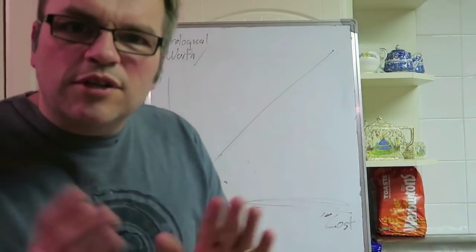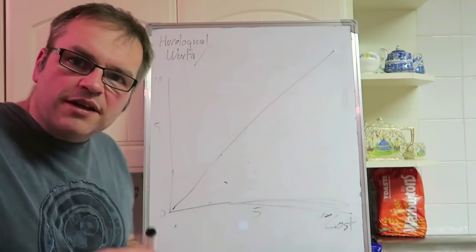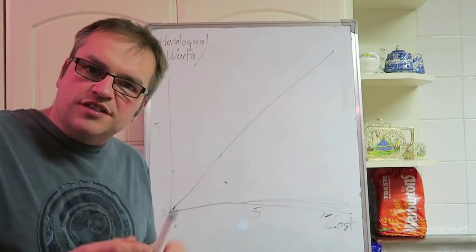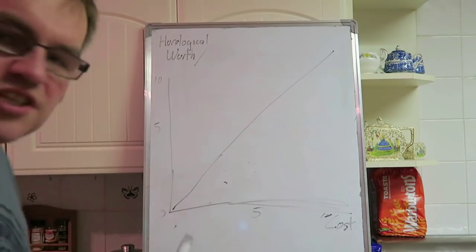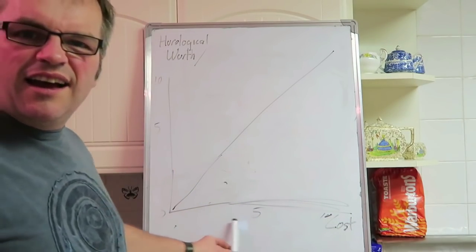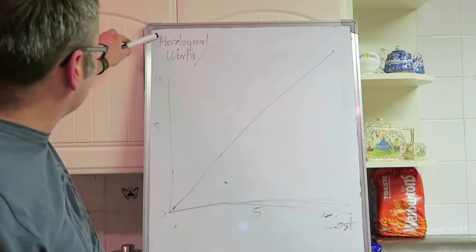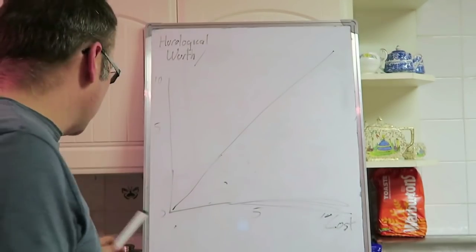I'm going to try in a very general and sort of tongue-in-cheek way to clear up the tier system regarding watches. A lot of my fellow YouTubers seem to think price dictates the tier system. We have across the bottom here cost, and from zero to ten up here we have horological worth. You can also include branding too.